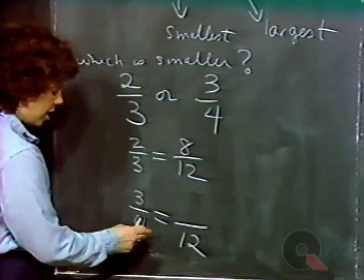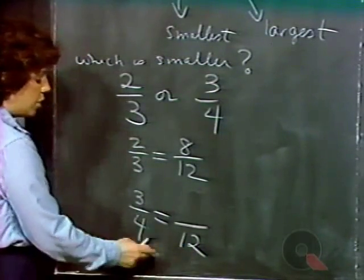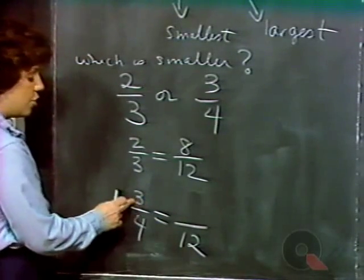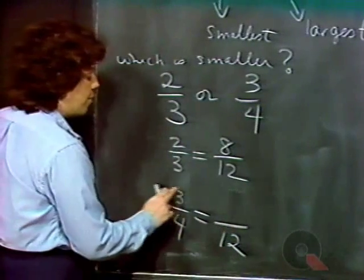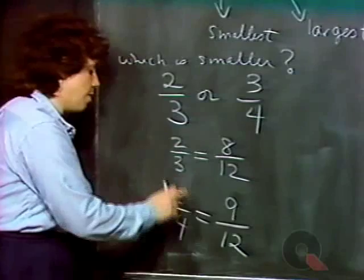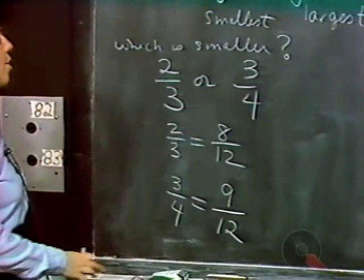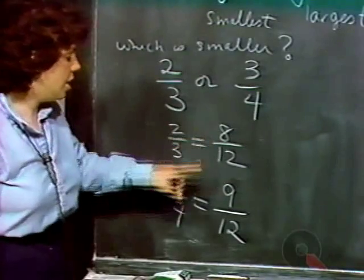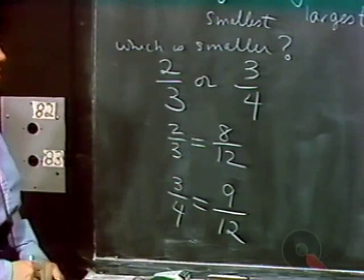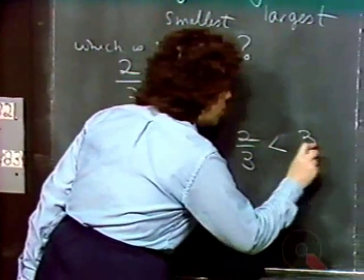To change fourths into twelfths, we multiply by three. Four times three is 12, and three times three is nine. So three-quarters is equivalent to nine-twelfths. And in that way, we see that two-thirds is smaller than three-quarters, because eight-twelfths is less than nine-twelfths. Two-thirds is less than three-quarters.